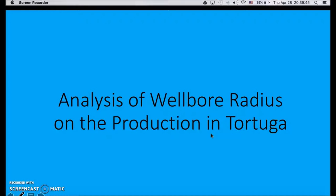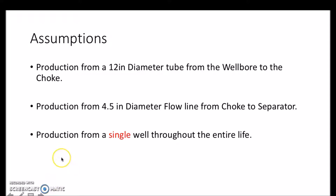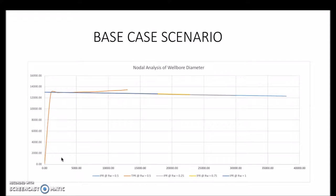Now looking at an analysis of the wellbore radius of the production in Tortuga deep water oil field. There are certain assumptions that were made in order to get these calculations. We assume production from a 12 inch diameter tube from the wellbore all the way to the choke, and production from a 4.5 inch diameter flow line from the choke all the way to the separator. And in our field, we are producing from just one well throughout the entire life of the reservoir.